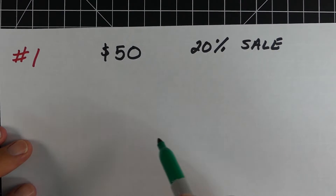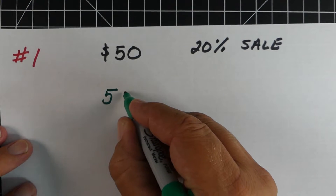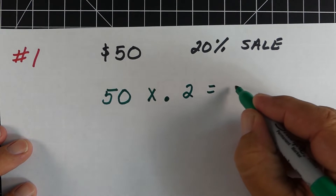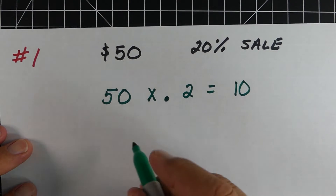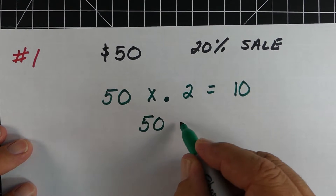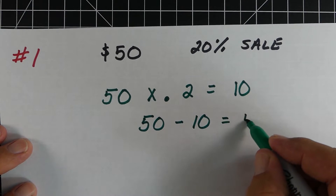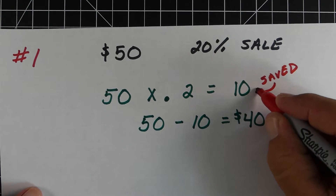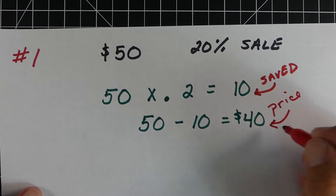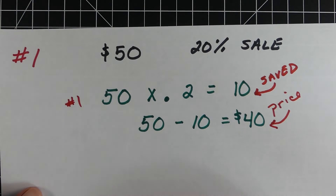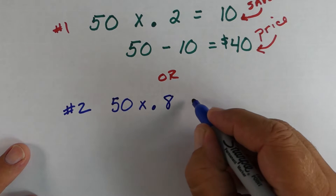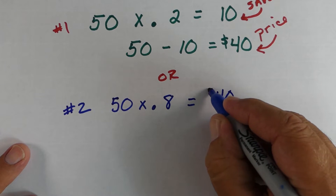Example 1: a $50 item with a 20% sale. Method 1: take 50 times 0.20, which gives us 10 — that's the $10 we're saving. Then 50 minus 10 equals $40, our sale price. Method 2: take 50 times 0.80 — since 0.80 represents the percent we're paying for — and that also gives us $40. Both methods give the same answer.